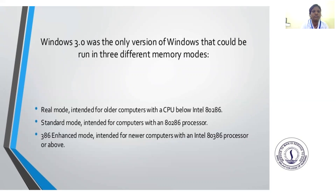Windows 3.0 is a new version that could be run in three different memory modes. Real mode: intended for older computers with a CPU below Intel 8086. Standard mode: intended for computers with an 80286 processor. 386 Enhanced mode: intended for newer computers with an Intel 80386 processor or above. These features are available in Windows 3.0.